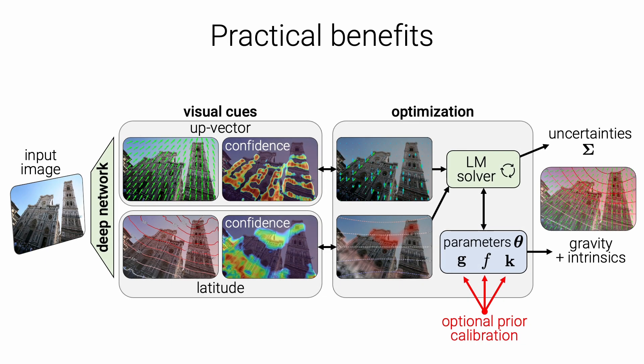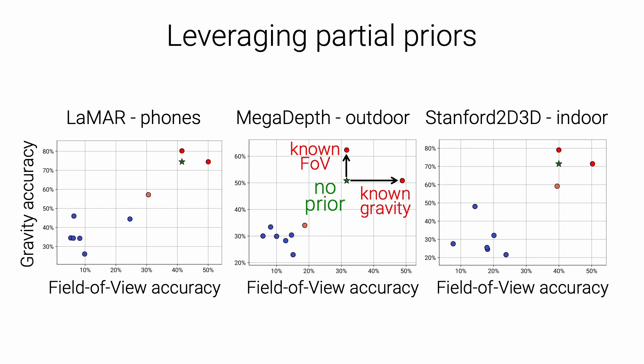As a third benefit of optimization, GeoCalib can leverage prior knowledge of some parameters. For example, the camera intrinsics can be found in the EXIF metadata or estimated by structure from motion, such that GeoCalib needs to estimate the gravity only. GeoCalib can use these intrinsics as a hard constraint by fixing the parameters, or as a soft prior with a regularization term. Our experiments show that this can further improve the accuracy of the remaining parameters to a large extent and consistently in all benchmarks. When the focal length is known, the gravity estimate gets more accurate. Conversely, when the gravity is known, the field of view is more accurately estimated.